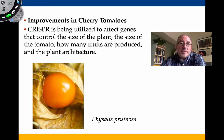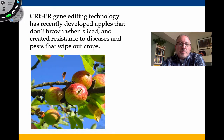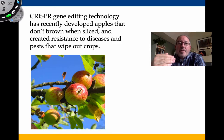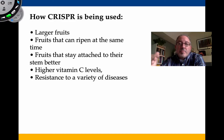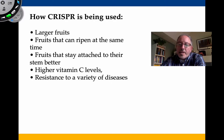Cherry tomatoes are being targeted with CRISPR to affect genes that control plant size, tomato size, how many fruits are produced, and even plant architecture. Developing fruits that don't brown when sliced, that ripen at the same time for easier transportation, stay attached to their stem longer, have better nutritional quality, higher vitamin C levels, and resistance to disease — these are all goals in fruit crop science.